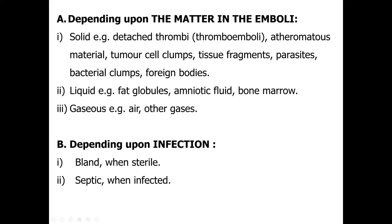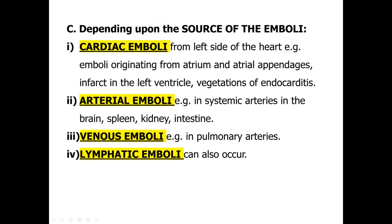Depending upon infection, emboli may be bland when sterile, or septic when infected. Depending upon the source, cardiac emboli originate from the left side of the heart — for example, from the atrium, atrial appendages, left ventricle, or vegetations of endocarditis. Arterial emboli are seen in systemic arteries in the brain, spleen, kidney, and intestine. Venous emboli are seen in pulmonary arteries.